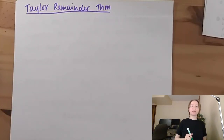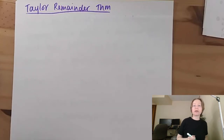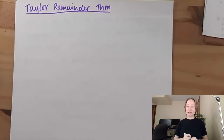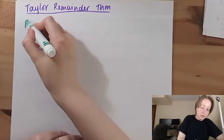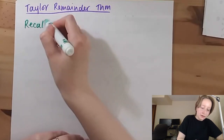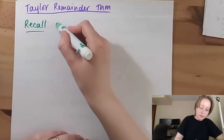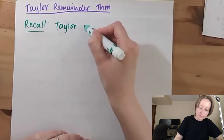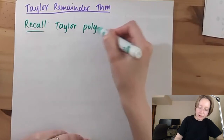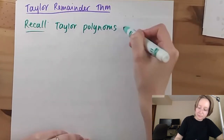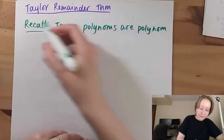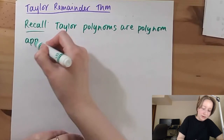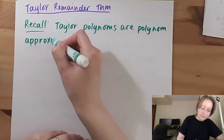Hey guys, so I wanted to talk to you today about the Taylor Remainder theorem. This is a continuation of the Taylor polynomials we started in the previous video. So let's recall what we were doing then. Taylor polynomials are approximations to functions around the center, x is equal to a.